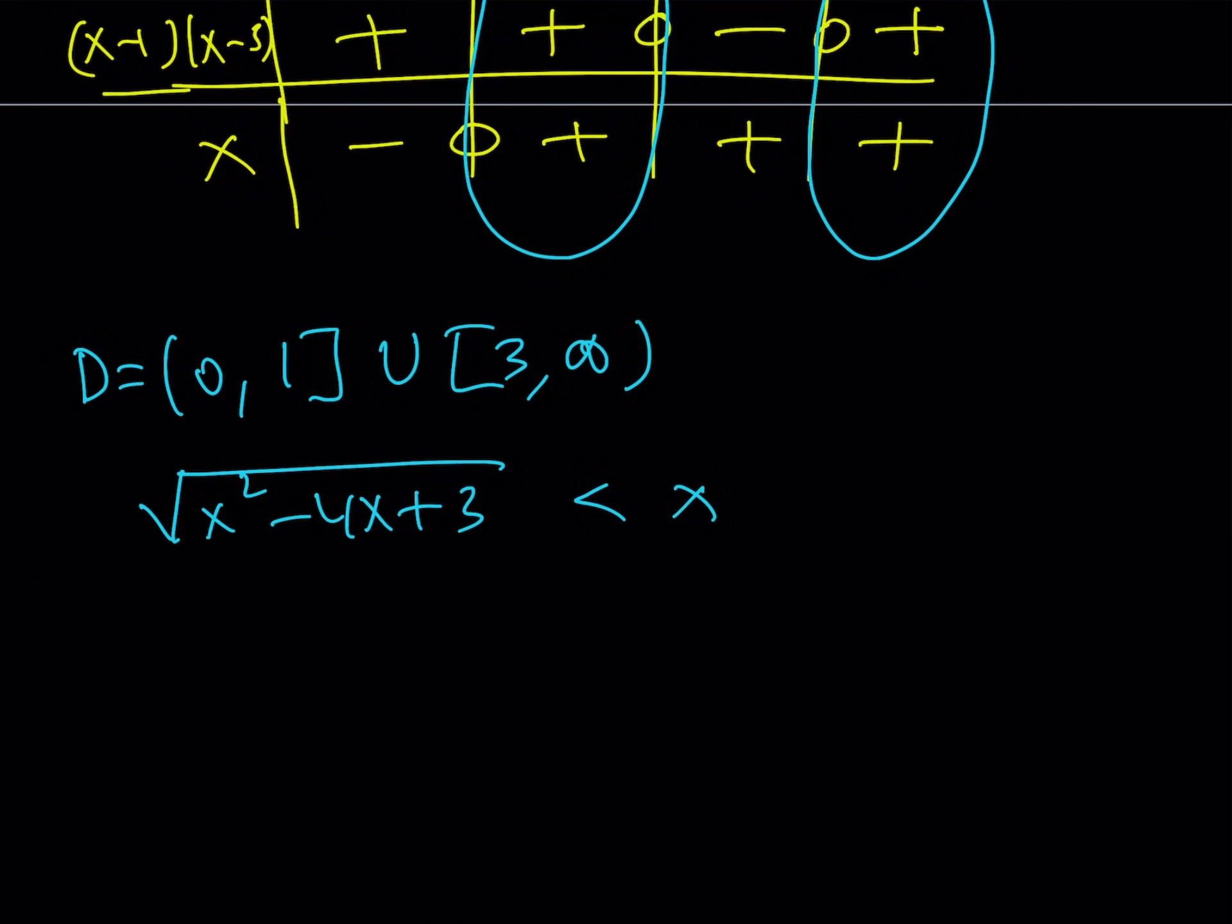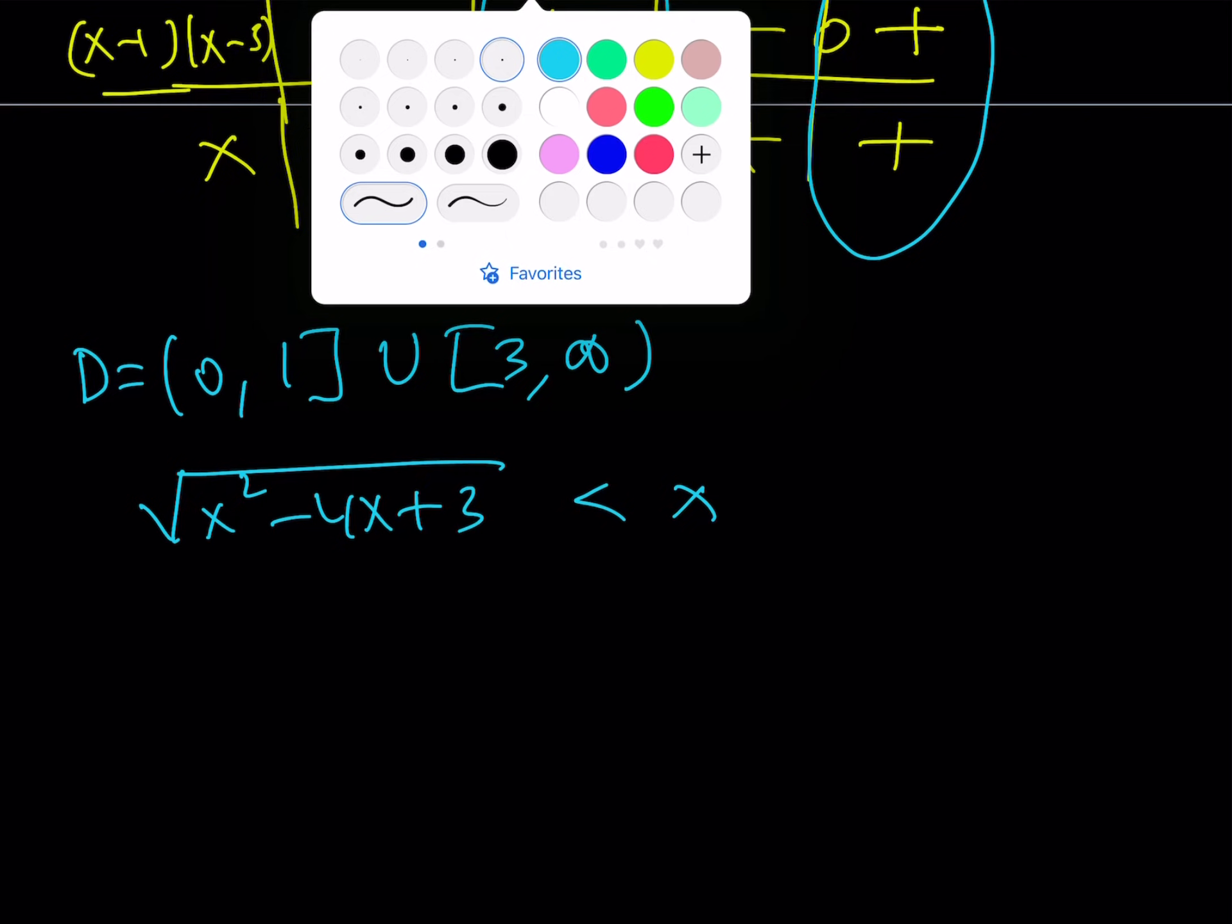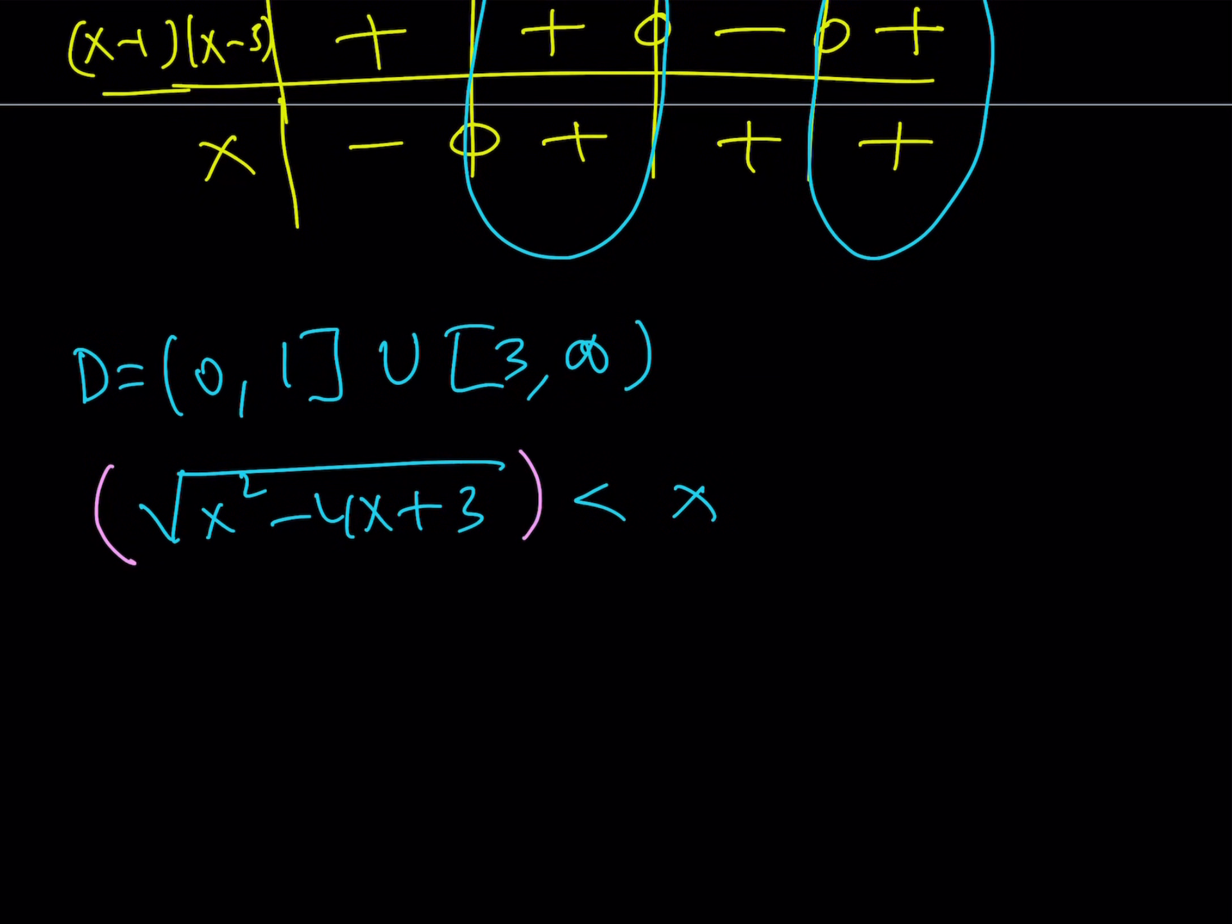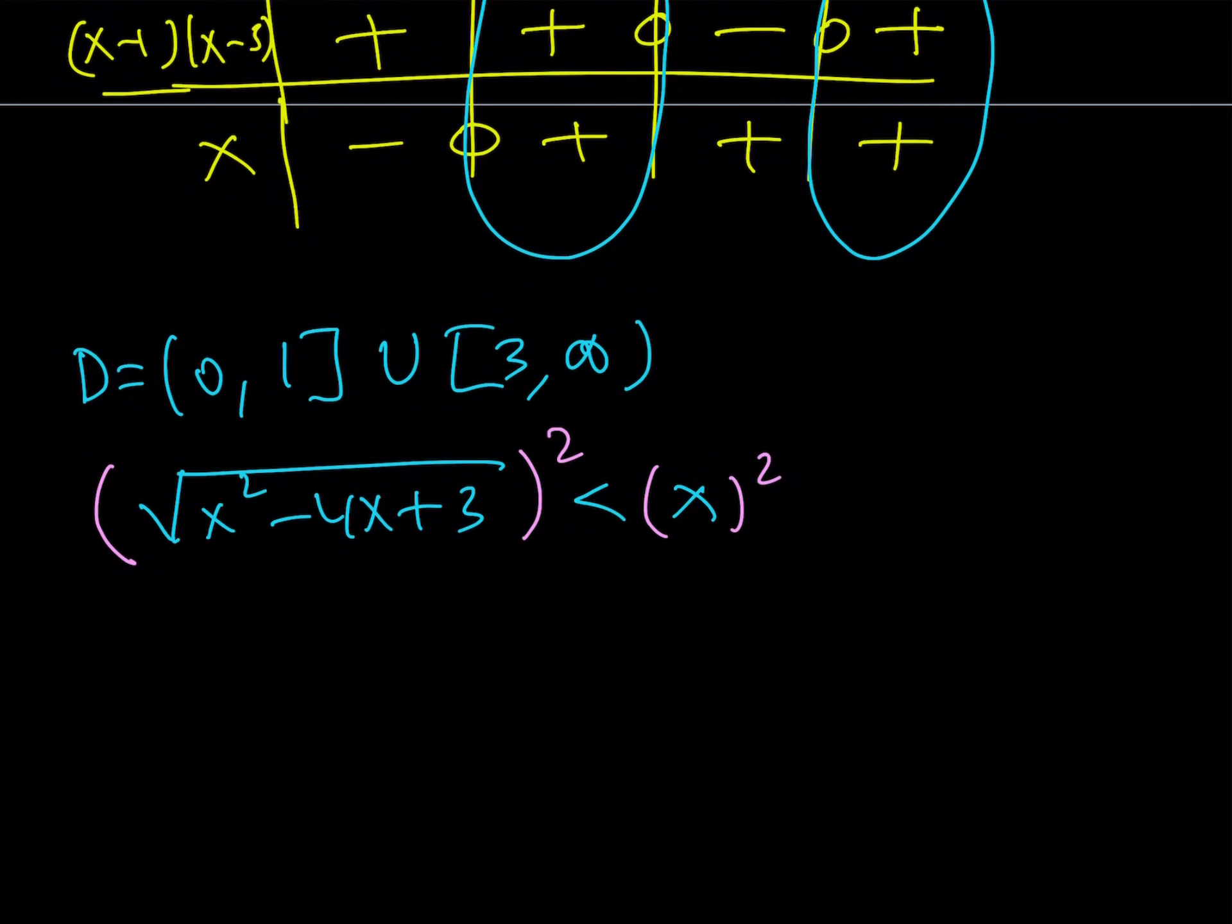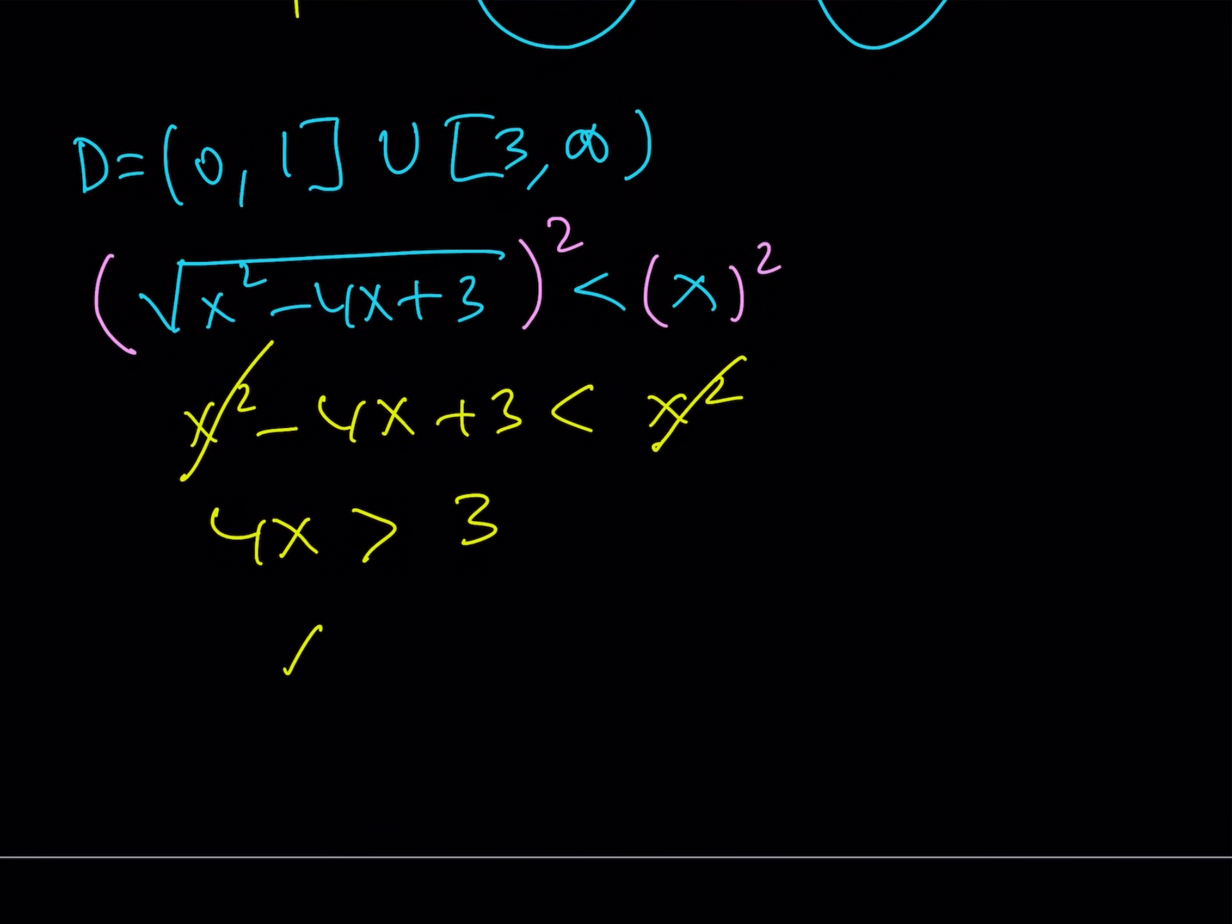I'm going to rewrite it in the original form to solve it because I already checked the domain, so I'm good with that. This needs to be less than x. Let's go ahead and square both sides. Obviously, squaring brings some problems, but not when you check the domain. Hopefully, you're not going to get extraneous solutions from here. So when you square both sides, you get this basic thing. X squared cancels out. That's why we kind of square both sides. And we can put the 4x on the right-hand side and leave the 3 on the left-hand side and then flip sides. So it looks like this. And this gives you x is greater than 3 fourths.